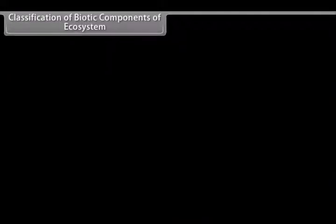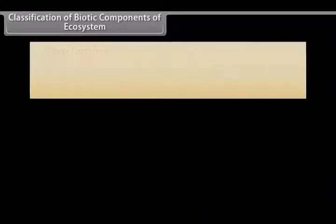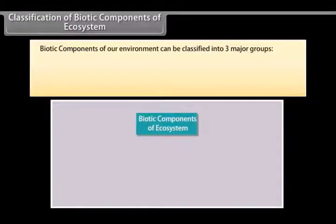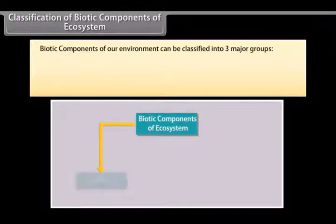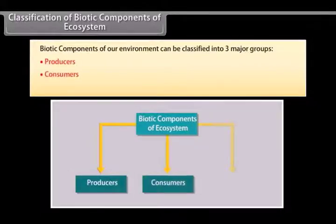Classification of biotic components of ecosystem. Biotic components of our environment can be classified into three major groups. They are producers, consumers and decomposers.